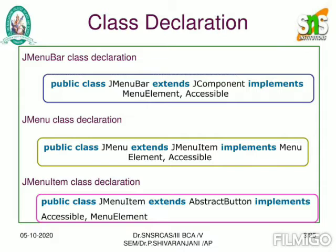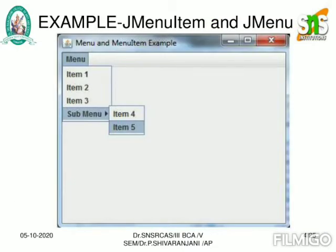The third statement explains how to display a menu item. You create a class called JMenuItem that extends AbstractButton and implements Accessible and MenuElement interfaces. This is the way of declaring your JMenuBars. An example will explain what a menu, menu bar, and menu item are. In the example window you can see a small window with the title 'Menu and Menu Item Example'.